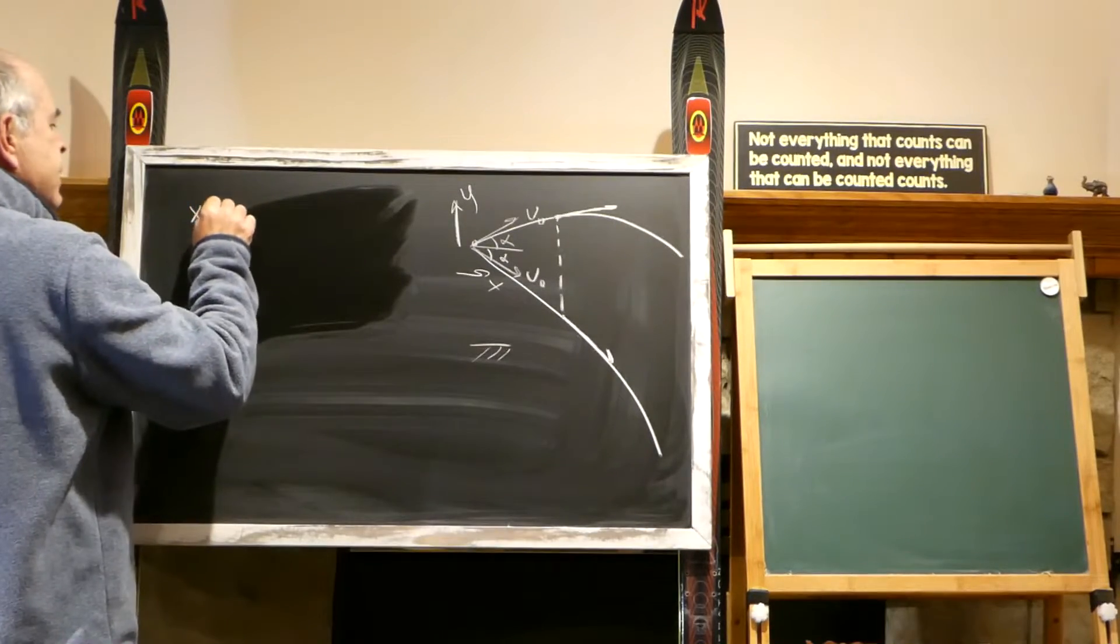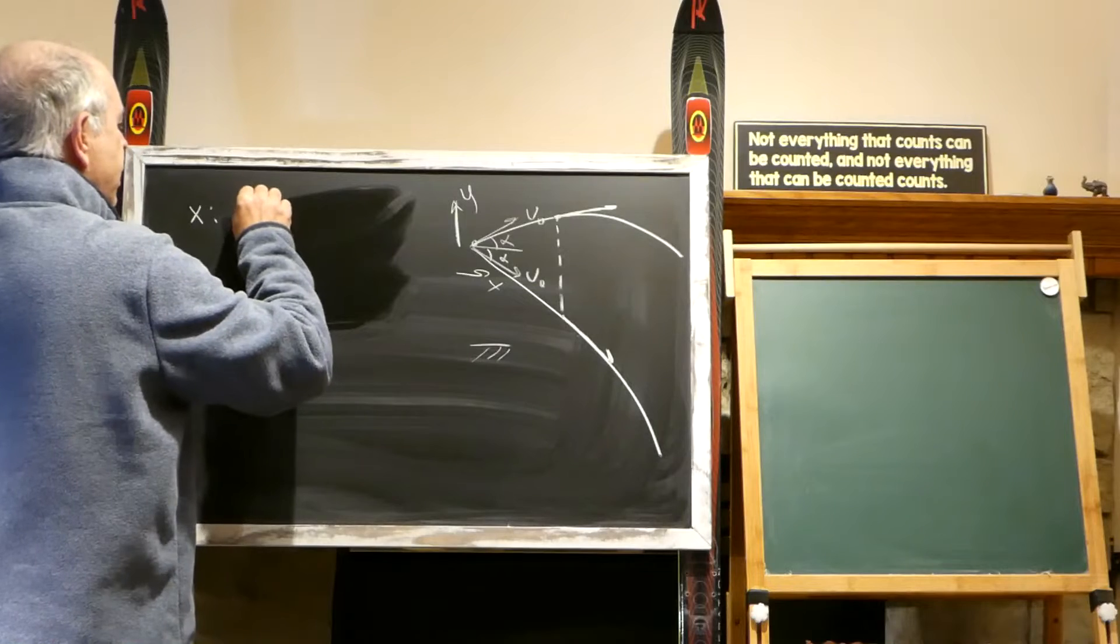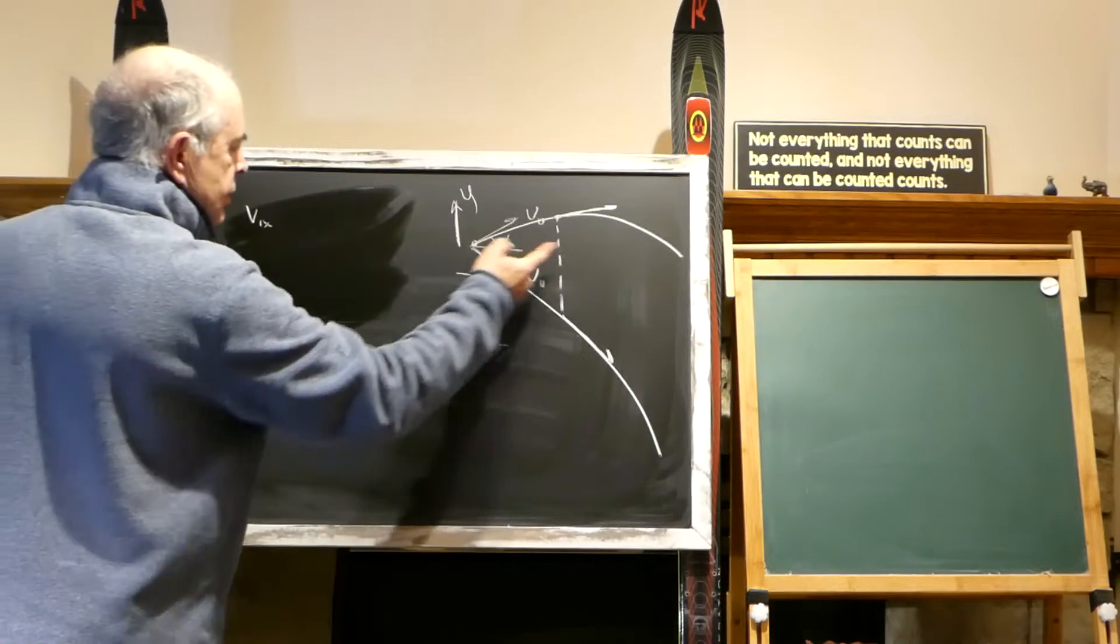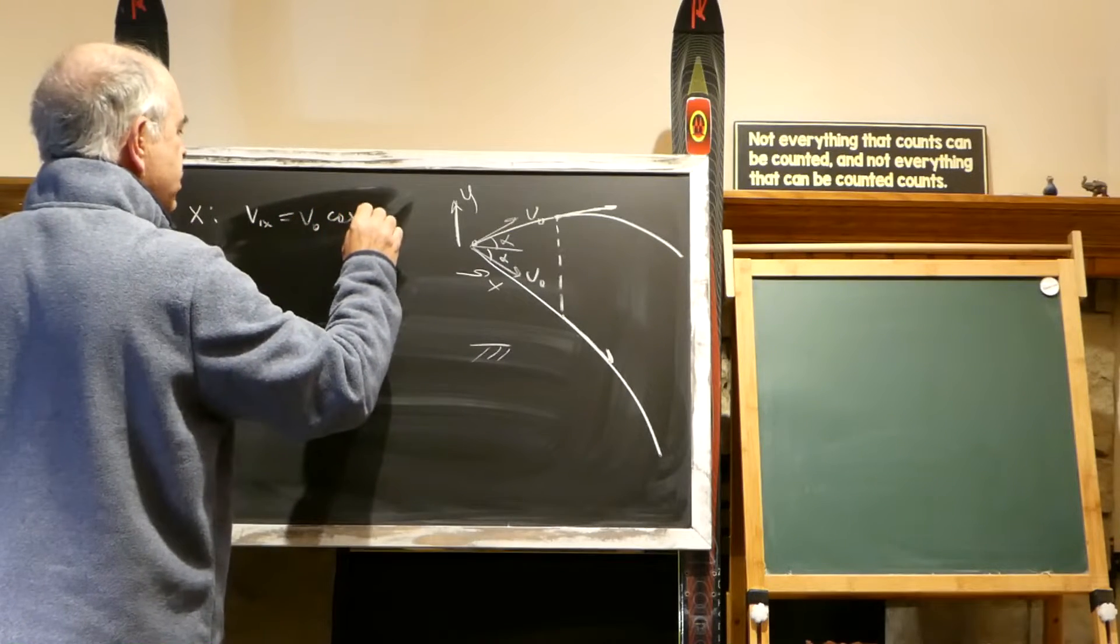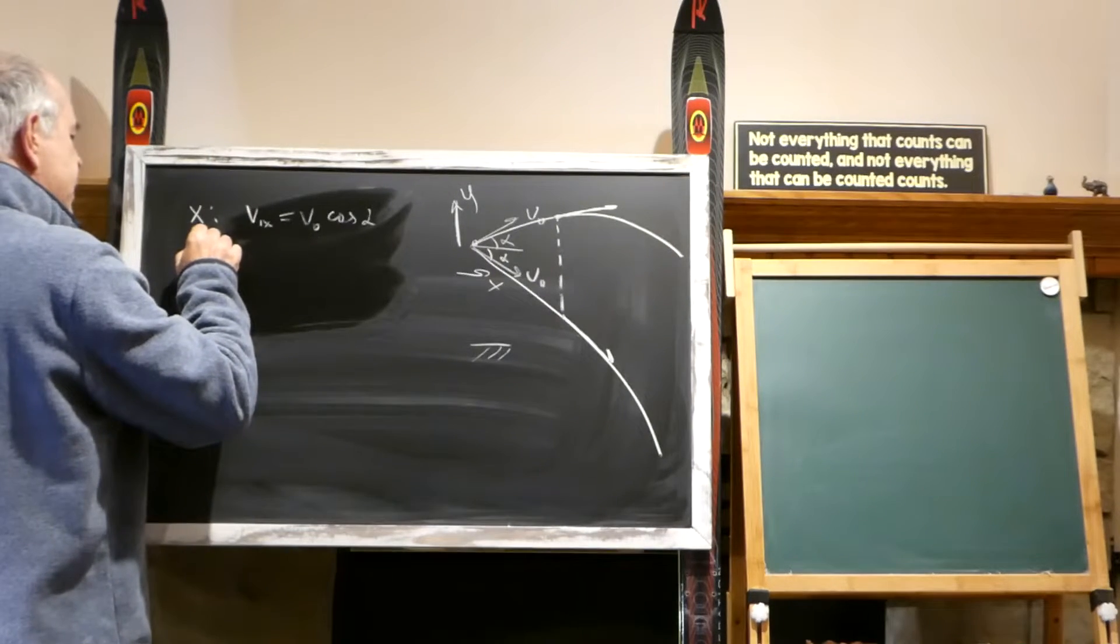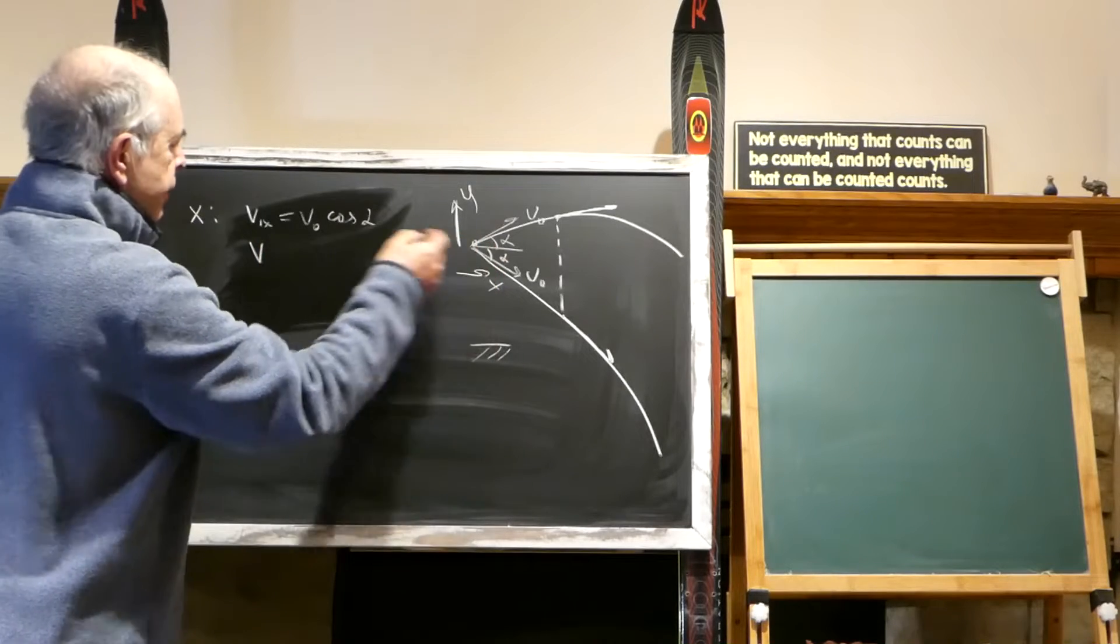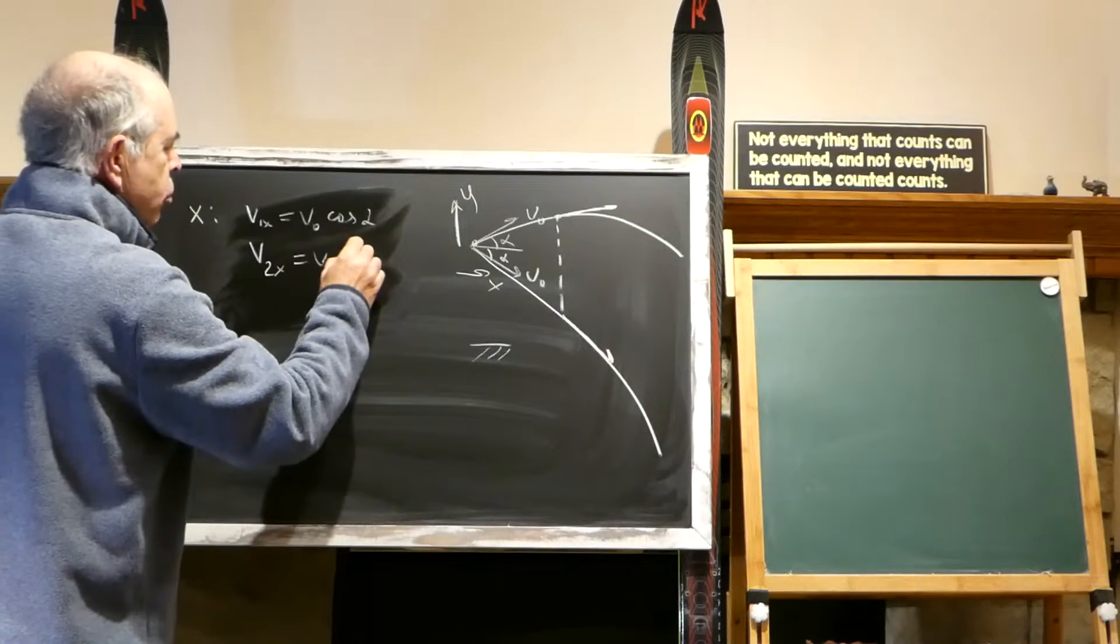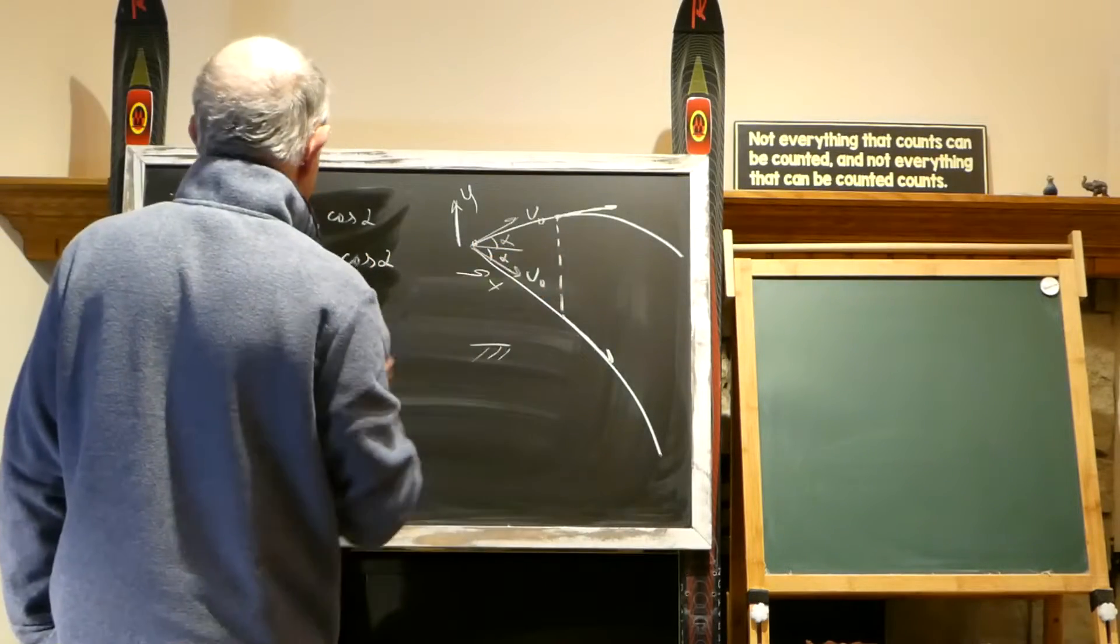And along x we have the first body, v1x in this direction. It is the speed v0 cosine alpha and it doesn't change with time. And the second body has v2x with the same absolute velocity. So those velocities are the same.